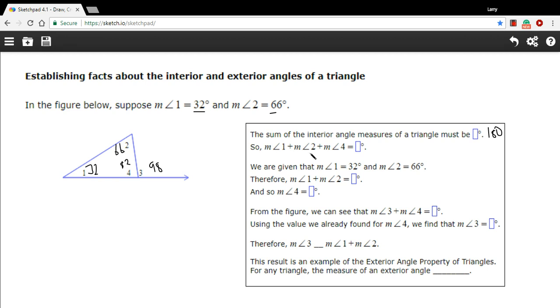So measure of angle 1 plus measure of angle 2 plus measure of angle 4, those are all the interior angles, has to be 180. And then it says we are given that angle 1 is 32, angle 2 is 66, therefore 1 plus 2 is what? Well, we came up with 98 for that. And so measure of angle 4 then was 82.